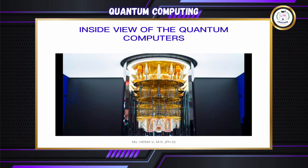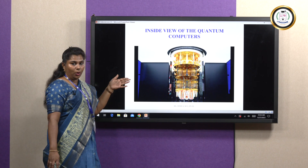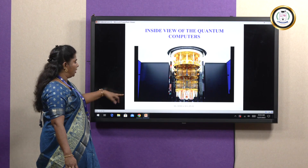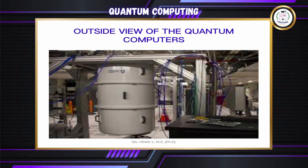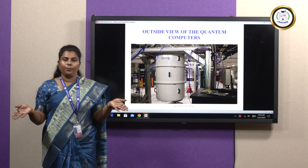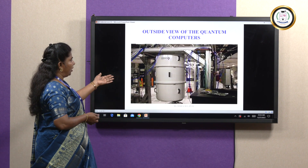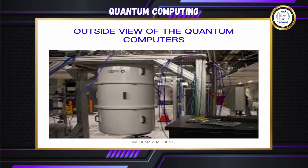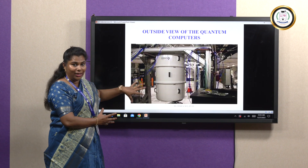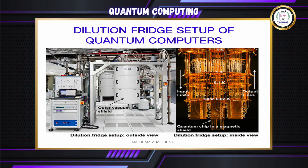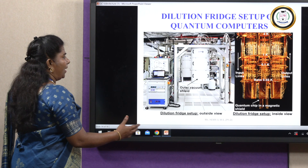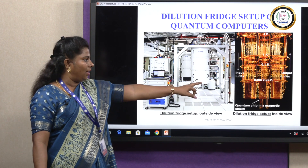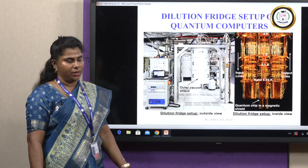Now we will see the inside view of how quantum computers look like. This is the inside view of our quantum computer, and this is the outside view. Quantum computers do not look like the classical computers we use now. The outside view looks like a boiler-like structure and it occupies a wide area. This is the dilution fridge setup of our quantum computers — the encapsulated inside view.